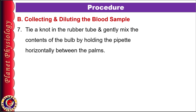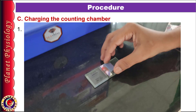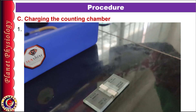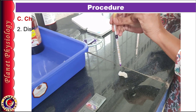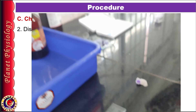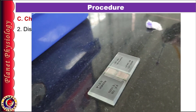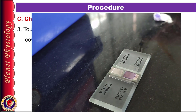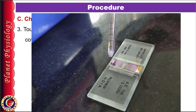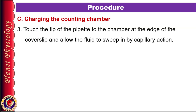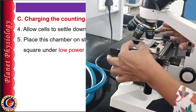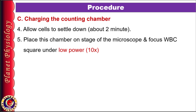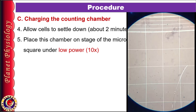This completes your preparation of the blood sample and you are ready to perform the cell count. To charge the chamber, place a clean coverslip over the Neubauer chamber — it should cover both counting surfaces and the side gutters. Discard the first two drops from the pipette, then allow a small drop to form and touch it to the chamber's edge near the coverslip. It will immediately sweep under the coverslip by capillary action. Wait a minute for cells to settle, then place the chamber on the microscope stage. Since it is already focused under 10x, you will only need fine adjustment to visualize WBCs.